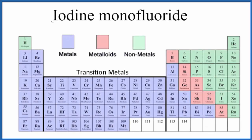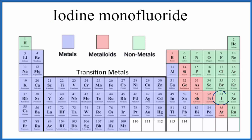Let's write the formula for iodine monofluoride. The first thing we do, we look at the periodic table. Here's iodine — iodine is a nonmetal. Fluoride, that's from fluorine, and that is a nonmetal as well.